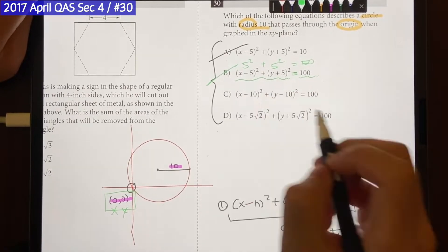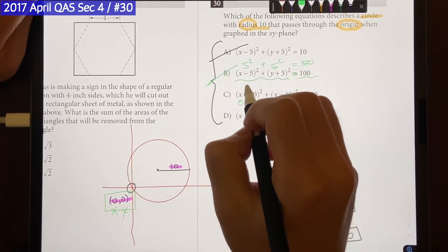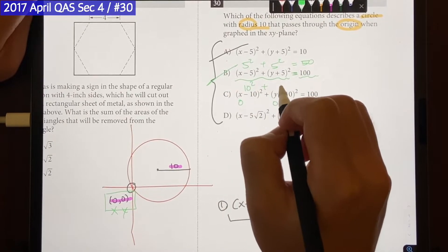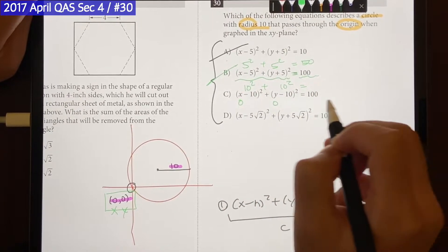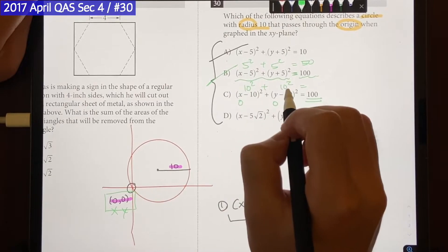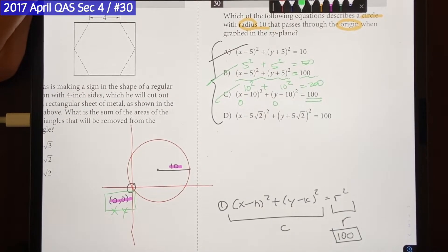What about choice C? If it's 0, 0 that means it's going to be 10 squared plus 10 squared which is supposed to be 100 but 100 plus 100 is going to be 200. So choice C is also out.